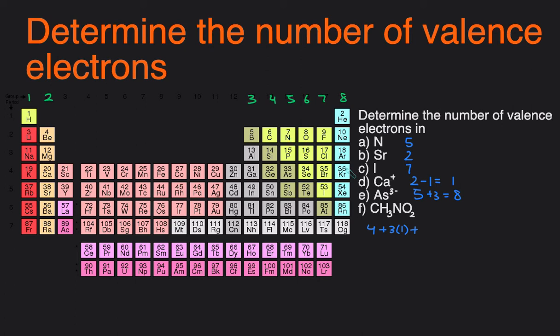Nitrogen, we figured out earlier, has five. And oxygen, there are two oxygens, and each oxygen has six. So we sum that together: four plus three plus five plus twelve. That equals 24 valence electrons.